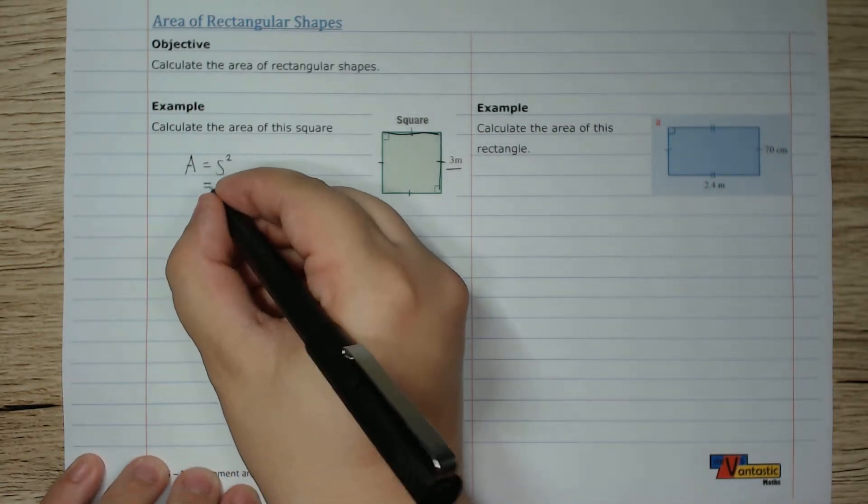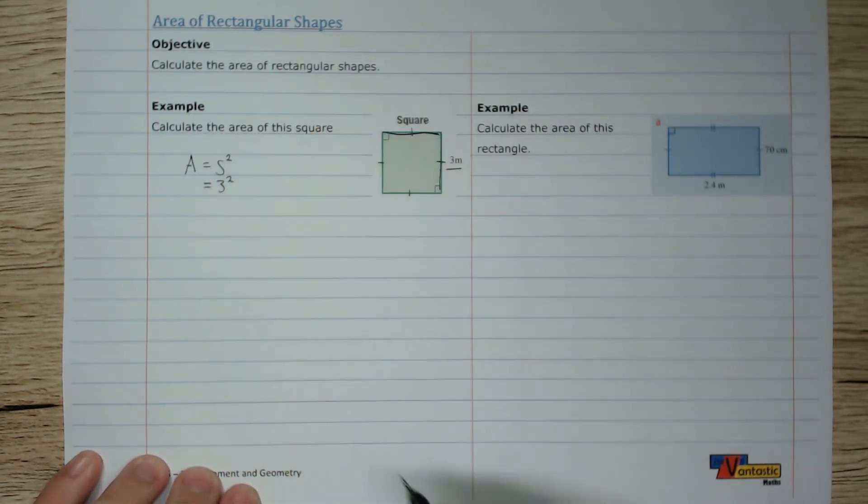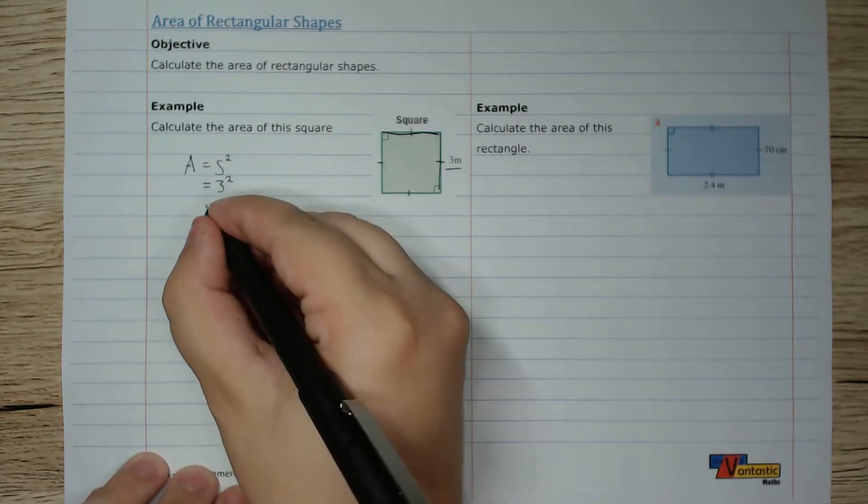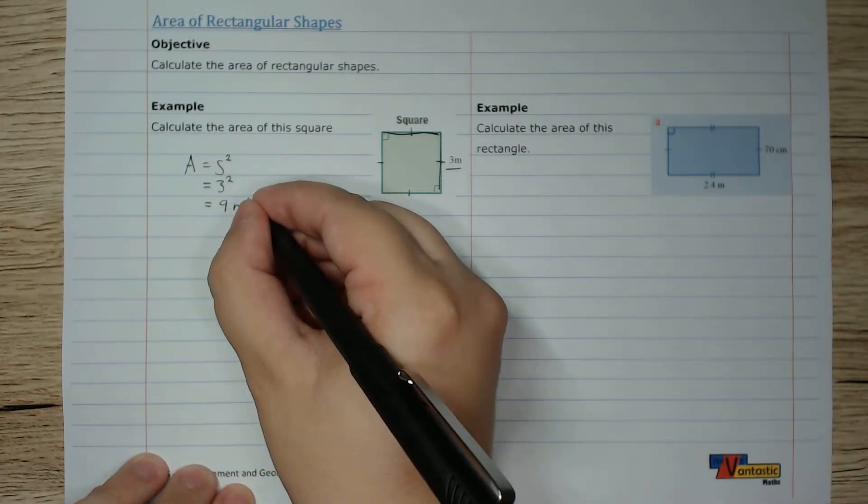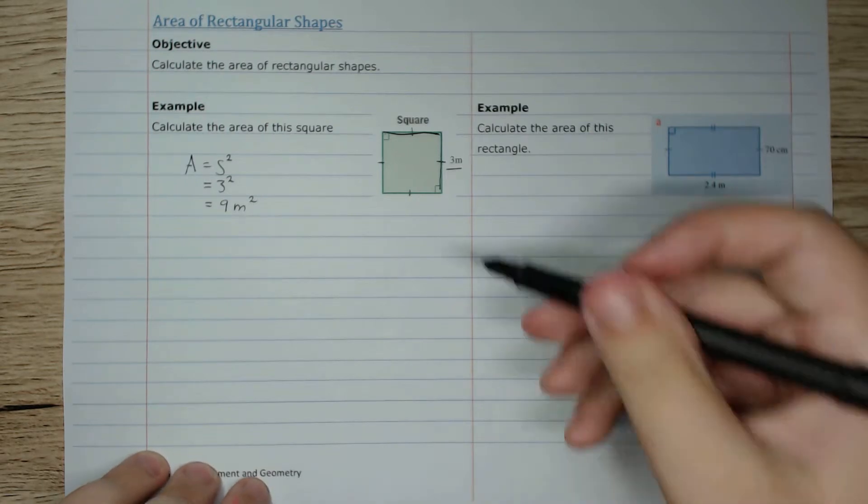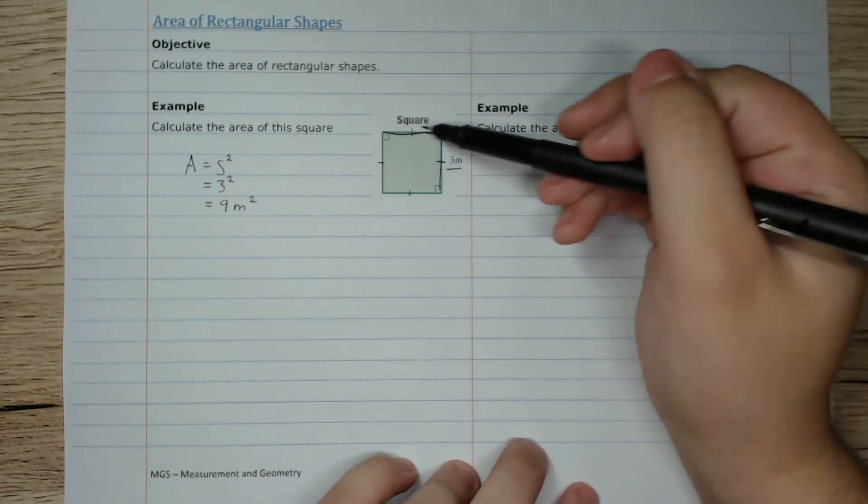The area of this square is going to be 3 squared, and 3 squared is 9 meters squared. So this square is 9 meters squared in area.